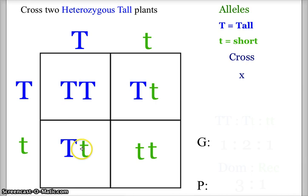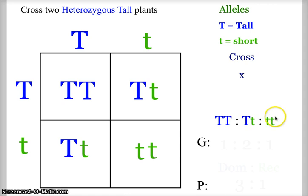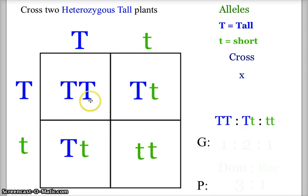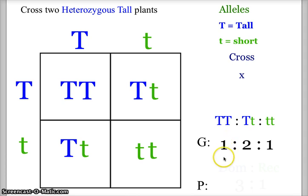Now that we've completed the Punnett square, we can break down our genotypic ratio (G) and our phenotypic ratio (P). The genotypic ratio always follows the order homozygous dominant to heterozygous to homozygous recessive: TT, Tt, tt. This ratio from the Punnett square has one offspring being homozygous dominant, two offspring being heterozygous, and one offspring being homozygous recessive — a ratio of 1 to 2 to 1.